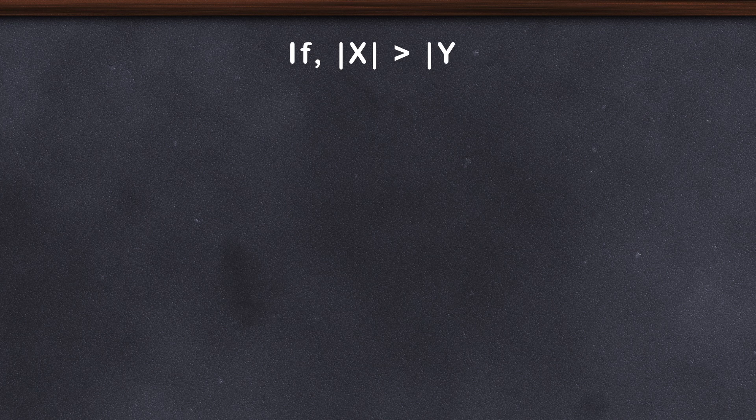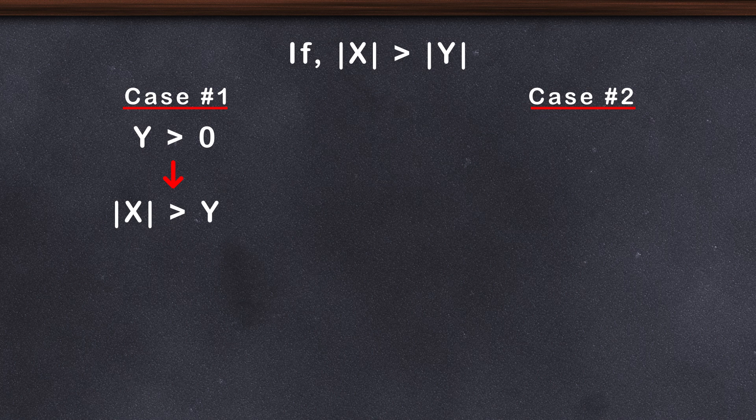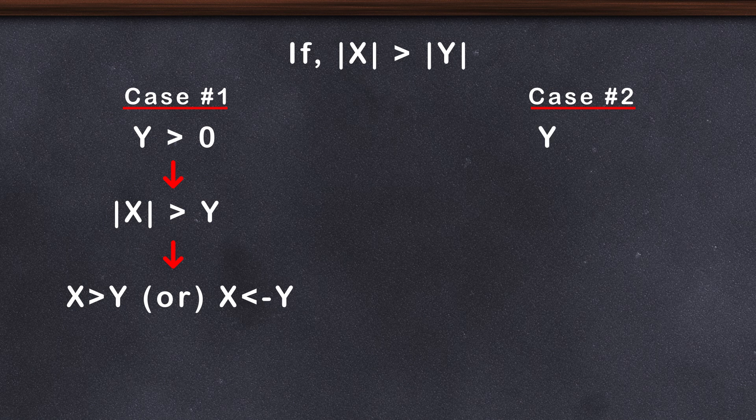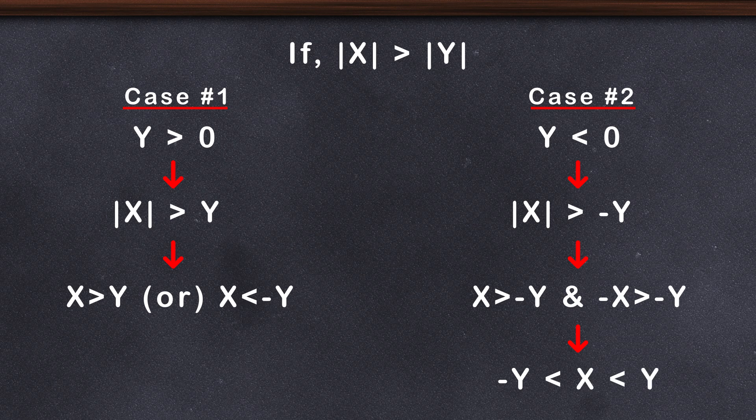If |x| > |y|, it implies two cases. Let's say y > 0: |x| > y, which is equal to x > y or x < -y. If y < 0: |x| > -y, x > -y and -x > -y, which is equal to -y < x < y. So there will be multiple solutions while dealing with absolute values.